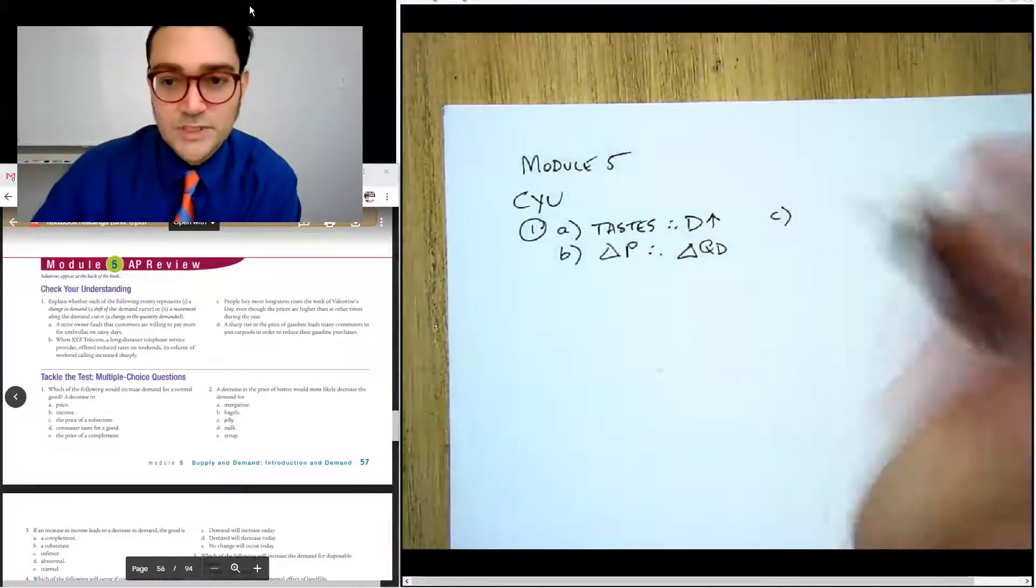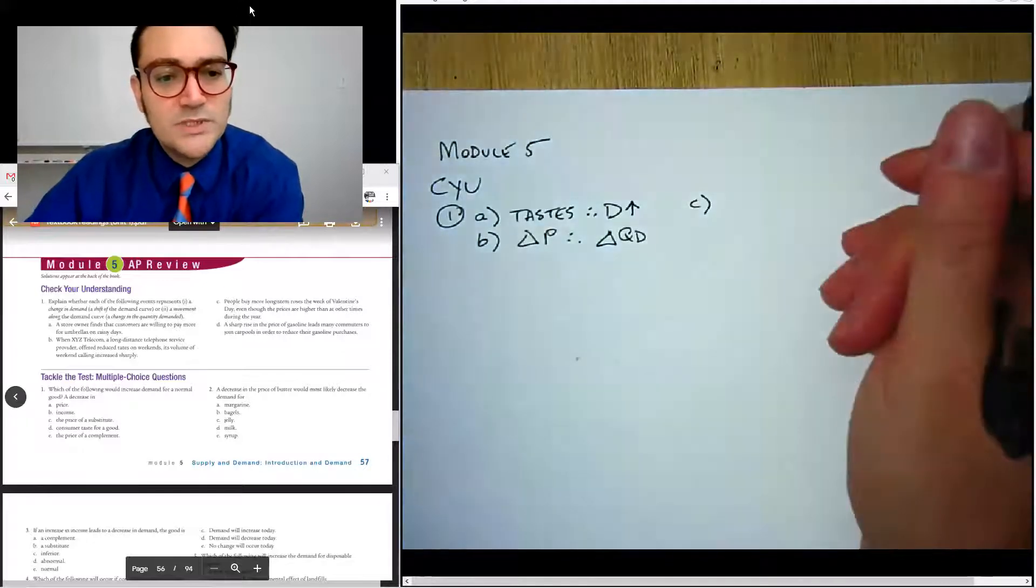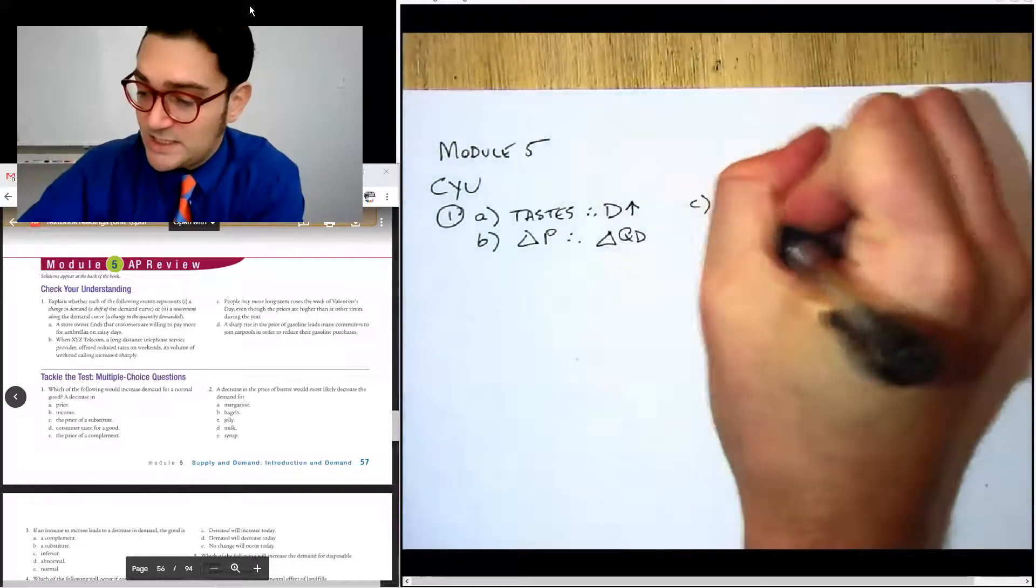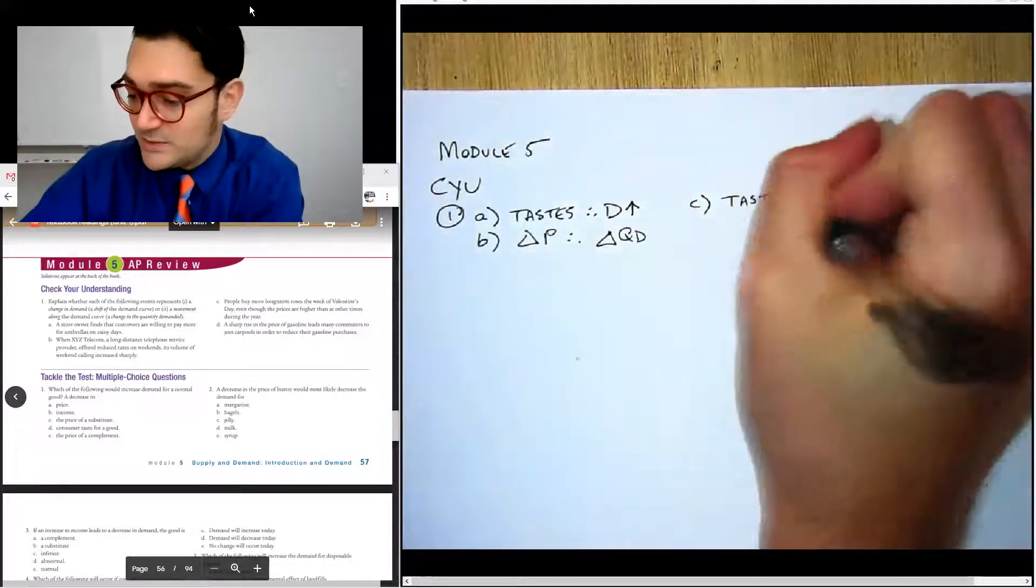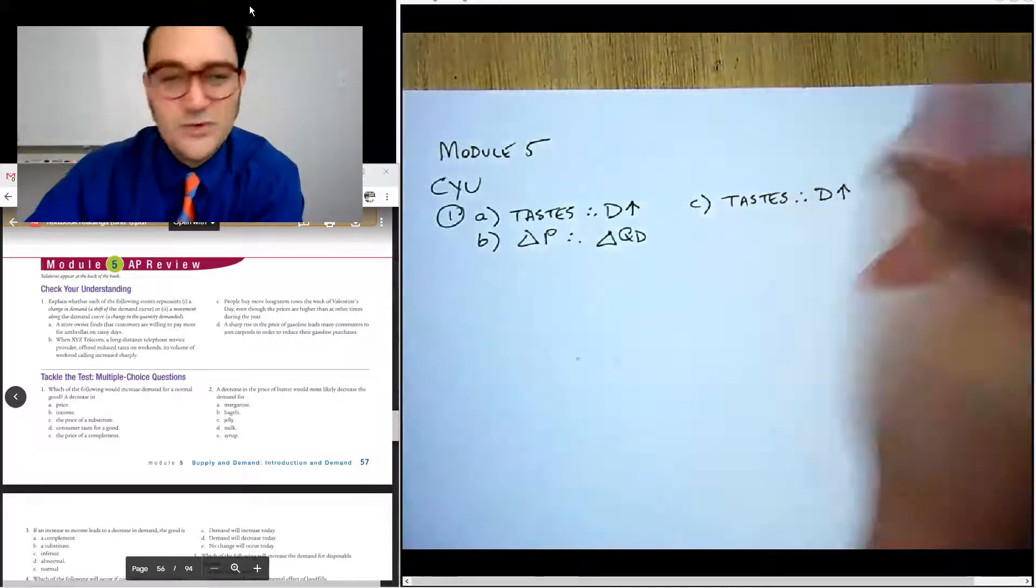We'll put C next to it. People buy more long stem roses the week of Valentine's day, even though prices are higher. That's again, it's tastes. People have a taste for that. I mean, not literally, right? You're not eating roses or that would be kind of weird. And it's just increase in demand.